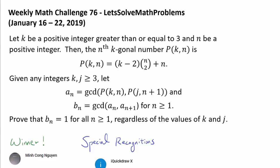Let k be a positive integer greater than or equal to 3, and n be a positive integer. Then the nth k-gonal number — this is a polygonal number — p(k, n), is (k−2) times n-choose-2 plus n.